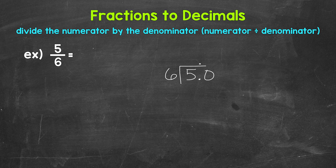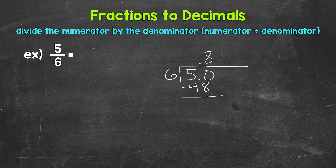How many whole groups of six in 50? Well, eight — that gets us to 48. Make sure the eight is above the zero, since we used that zero and thought of this as 50 divided by six, and that will line us up correctly. Now we multiply: eight times six is 48. Subtract: 50 minus 48 is two.